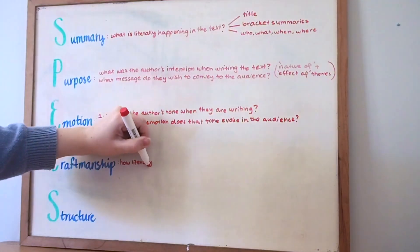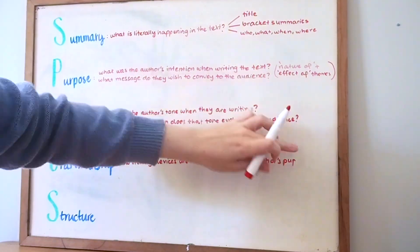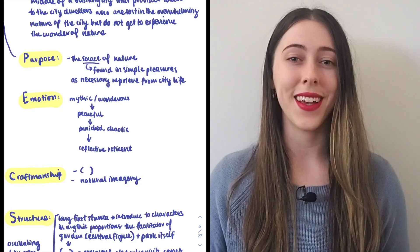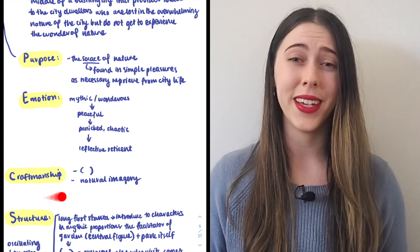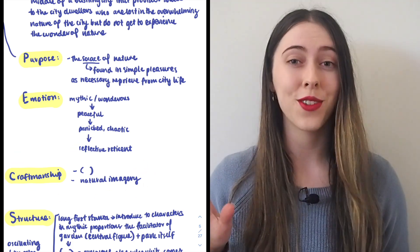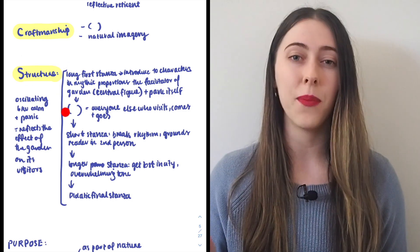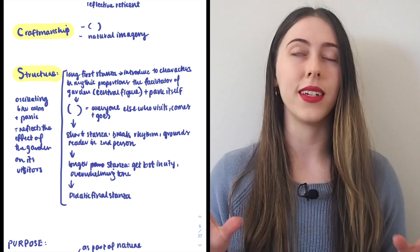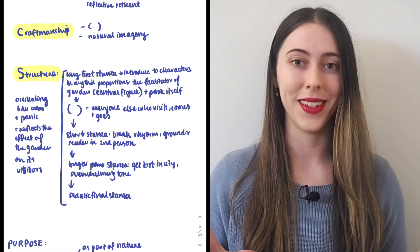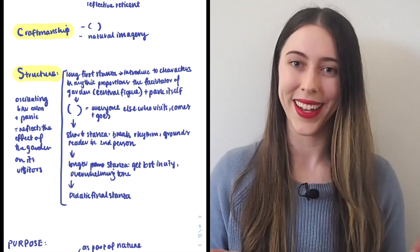Step four is craftsmanship, and this refers to how the literary devices are used to communicate the author's purpose. Unfortunately I can't say that I did anything particularly special here to identify techniques, but structure does get its own special letter in the acronym because regardless of the text type you always have to include at least one piece of structural analysis, preferably more than one but at least one.